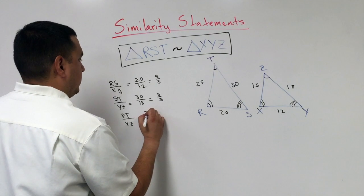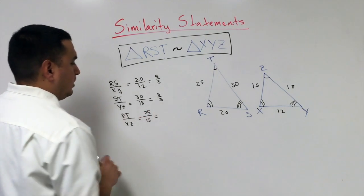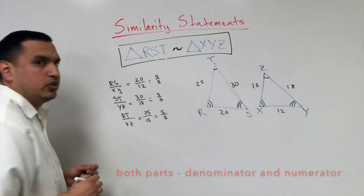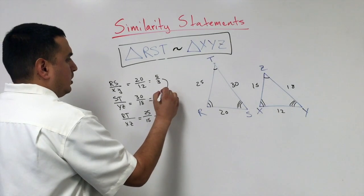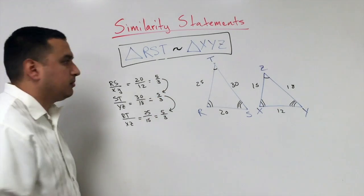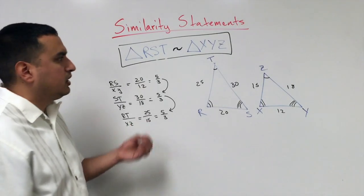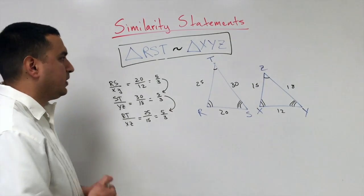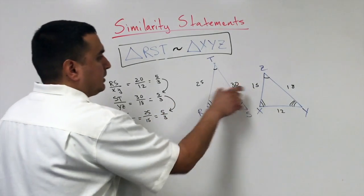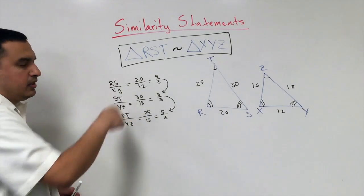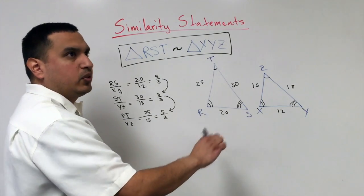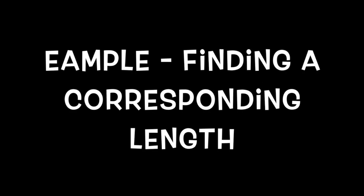The third ratio is 25 over 15, and if I divide both sides by 5, I get 5 thirds. Notice that each of these is the same. That's what similar means: the angles are congruent and the sides are proportional. If I take the corresponding sides and simplify, I get the same ratio for every corresponding side pair.